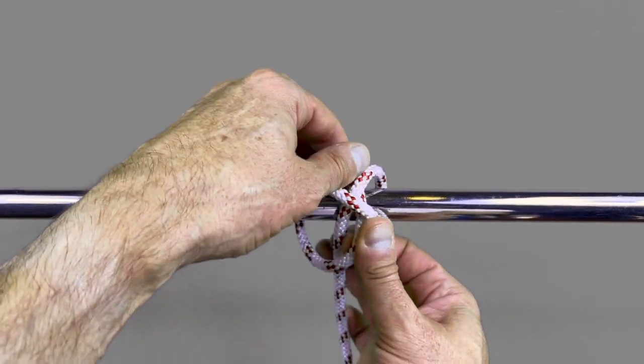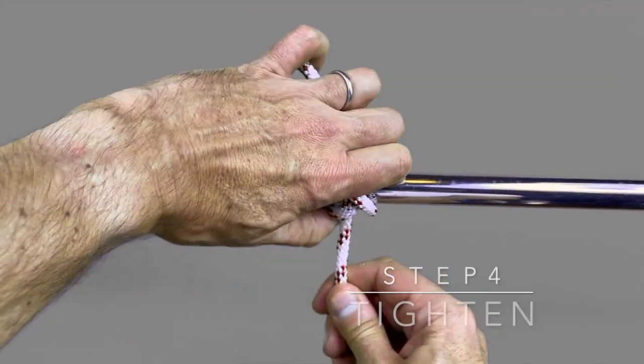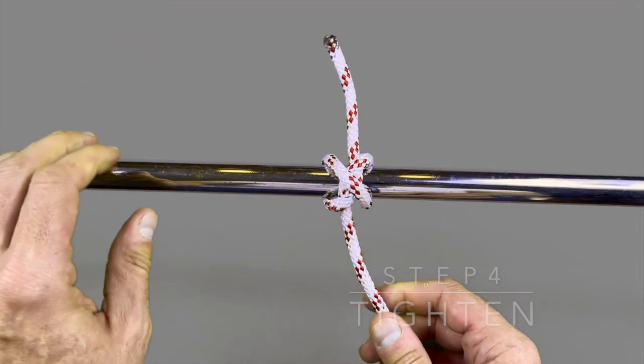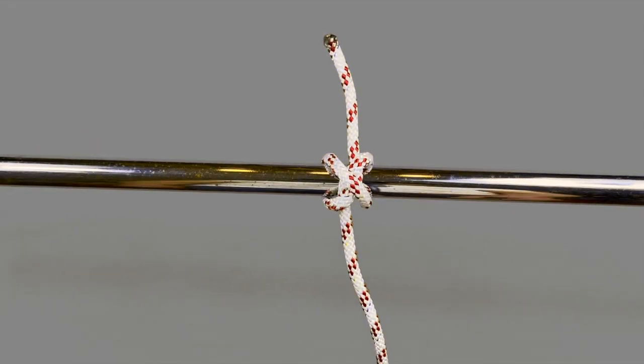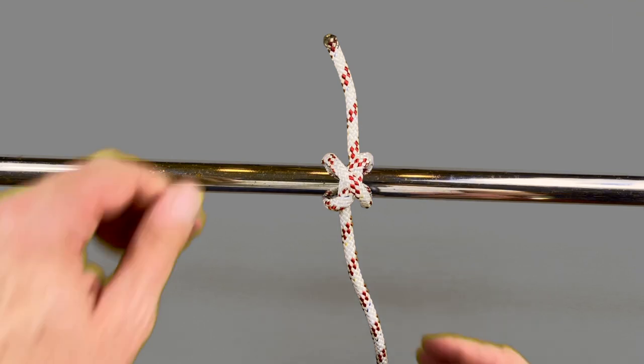To complete the constrictor knot, simply tighten, but do this in the knowledge that even the smallest amount of tension locks this knot tight.